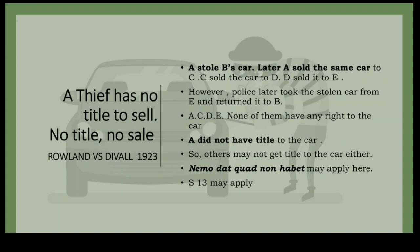A did not have any right to the car, so he cannot pass a good title. C has no ownership, meaning D has no ownership, meaning E has no ownership. A seller can only pass what he has as ownership — we call this the 'nemo dat' principle. A could not transfer the title, meaning C, D, and E did not have ownership of the car, meaning B still has ownership. Even if the buyer is honestly paying money, he will not have ownership.